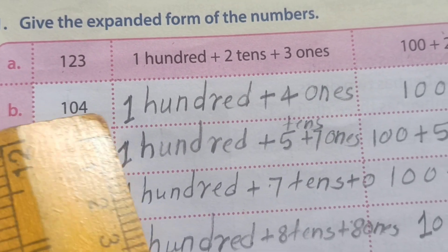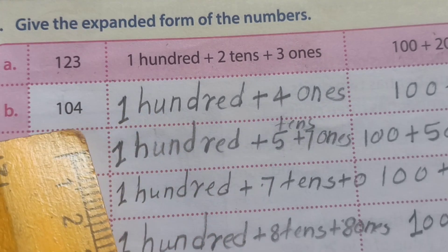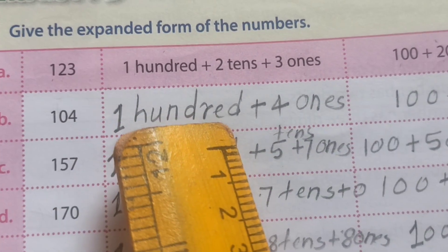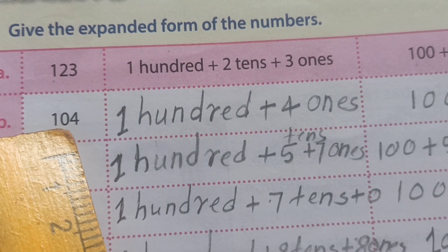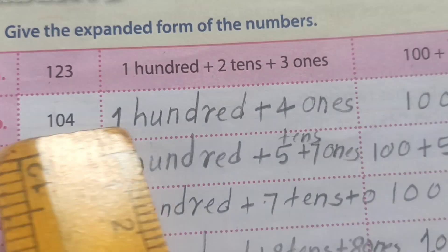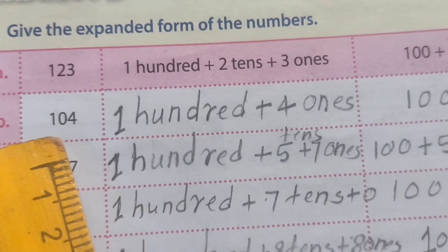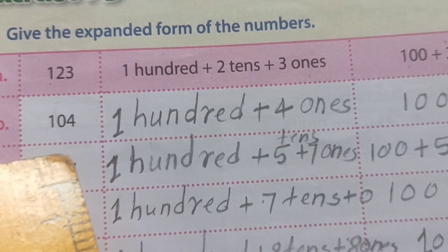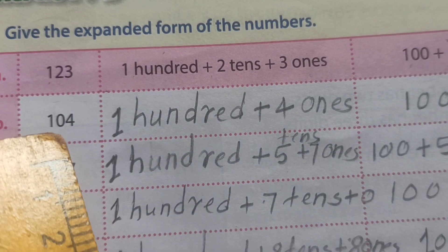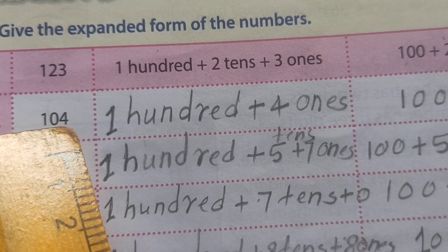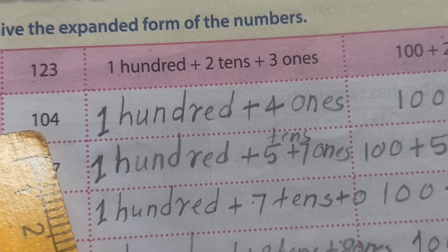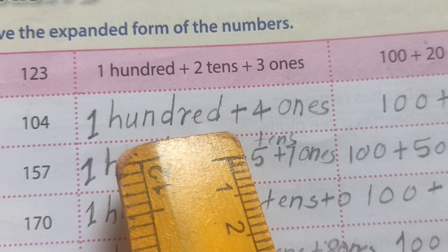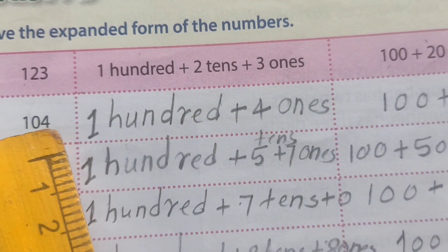Next example, B number: 104. How we read this one number? 100. 0 means 0 tens. You can write here 0 tens, or you didn't write here anything — means 0 means nothing. 100 and 4 ones. Means 104.